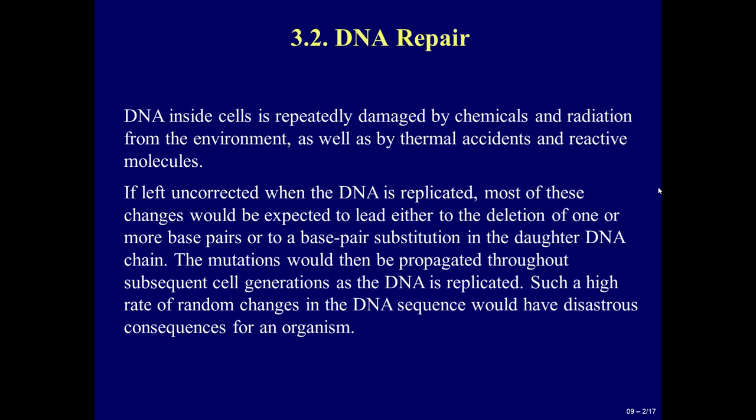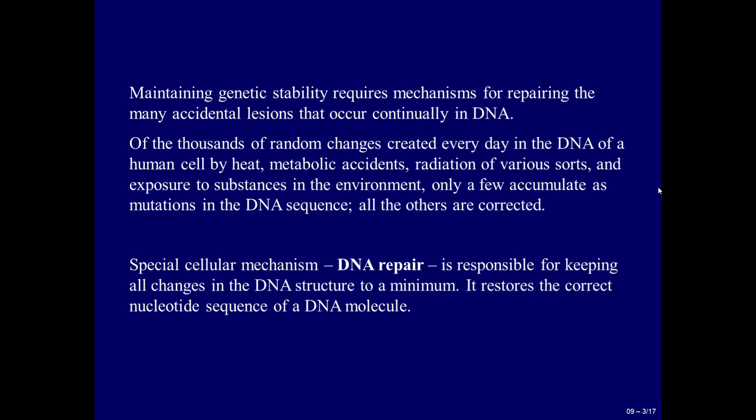DNA inside cells is repeatedly damaged by chemicals and radiation from the environment, as well as by thermal accidents and reactive molecules. If left uncorrected when the DNA is replicated, most of these changes would lead either to the deletion of one or more base pairs or to a base pair substitution in the daughter DNA chain. The mutations would then be propagated throughout subsequent cell generations as the DNA is replicated. Such a high rate of random changes in the DNA sequence would have disastrous consequences for an organism. Maintaining genetic stability requires mechanisms for repairing the many accidental lesions that occur continually in DNA.